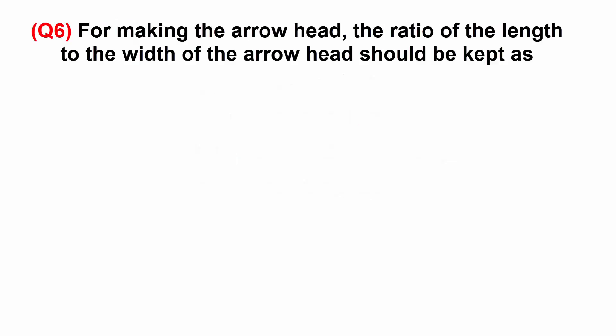For making the arrowhead, the ratio of the length to the width of the arrow should be kept as: A: 1. B: 2. C: 3. Or D: 4.